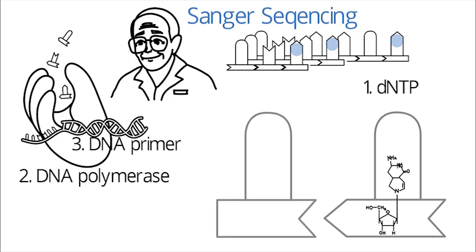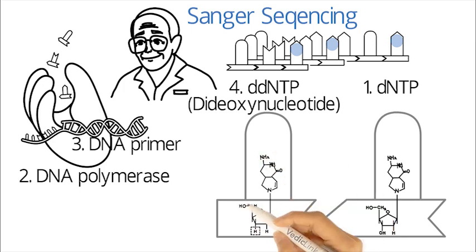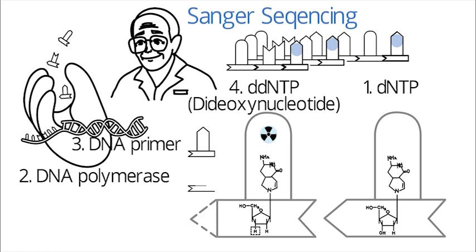We add a special ingredient, DDNTP, dideoxynucleoside. DDNTP differs from DNTP by having a radioactive tag and a missing end which prohibits DDNTP from further bonding to other DNTPs, terminating a growing DNA chain whenever it is incorporated. Like DNTP, DDNTP comes in 4 bases, A, T, G, C.